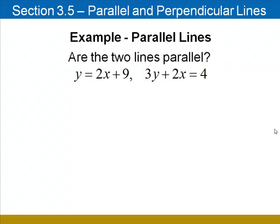Let's take a look at an example. Are these two lines parallel? Y equals 2x plus 9 and 3y plus 2x equals 4. The slope of the first line is 2 as it's already in slope-intercept form.